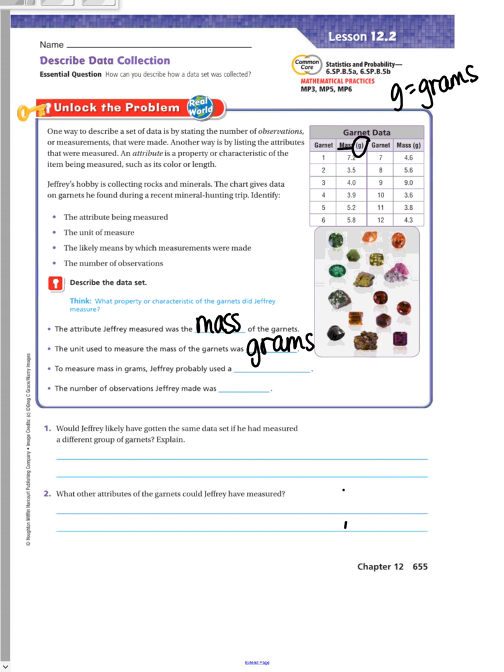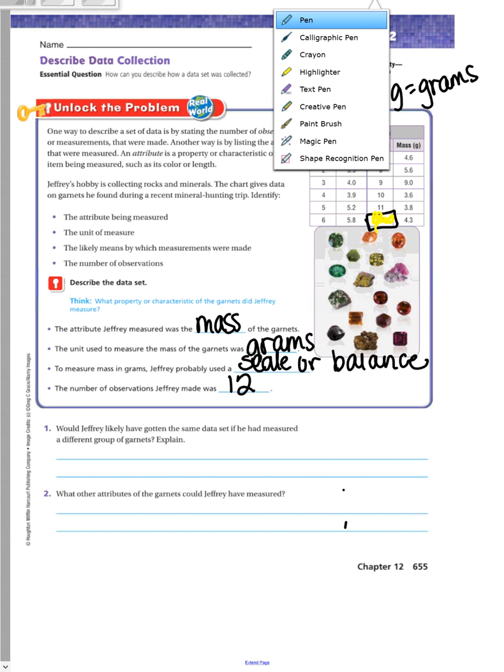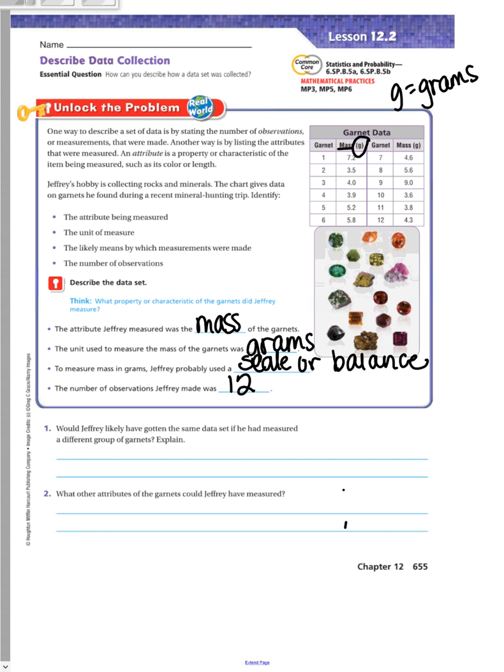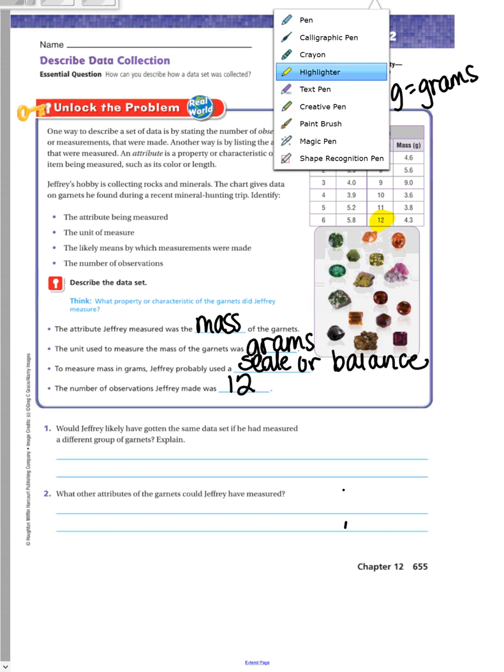To measure mass in grams, Jeffrey probably used a scale or balance, because grams is how heavy something is when you weigh something. The number of observations Jeffrey made was 12, and you can get that number by looking right here in your set, the number 12. I'm trying to use my highlighter, I used the wrong one.